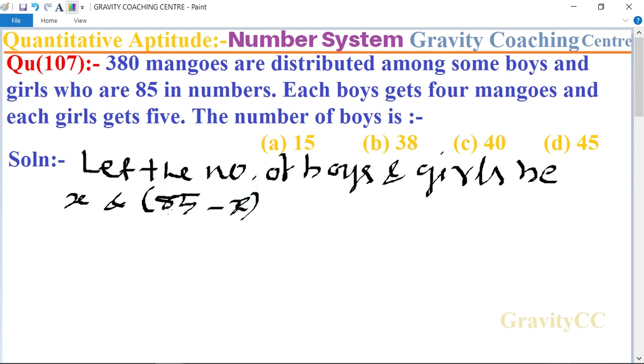Because the total number of boys and girls is 85. According to the question, each boy gets four mangoes, so 4x, plus each girl gets five mangoes, so 5 into (85 minus x).